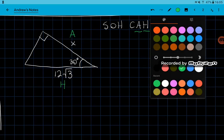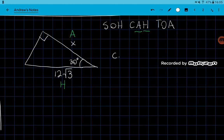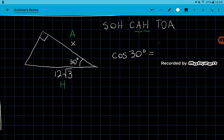So we go ahead and set this up. We say cosine of our angle, which is 30 degrees, is equal to the adjacent, which is the X, divided by the hypotenuse, which is 12 square root of 3.